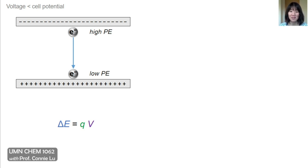Returning to this physics example, where an electron spontaneously moves between two metal plates, we have the equation where the change in electric potential energy is equal to the product of the charge of the electron times the voltage between the two charged metal plates. The spontaneous direction is from high potential electric energy to low potential electric energy.